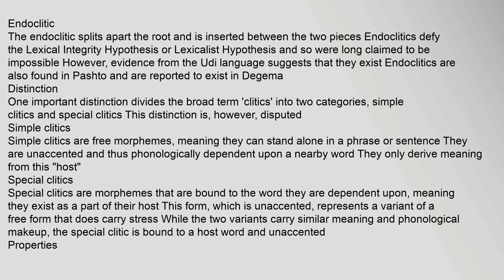One important distinction divides 'clitics' into two categories: simple clitics and special clitics. Simple clitics are free morphemes, meaning they can stand alone in a phrase or sentence. They are unaccented and phonologically dependent upon a nearby word. Special clitics are morphemes bound to the word they are dependent upon, meaning they exist as a part of their host. This unaccented form represents a variant of a free form that does carry stress.